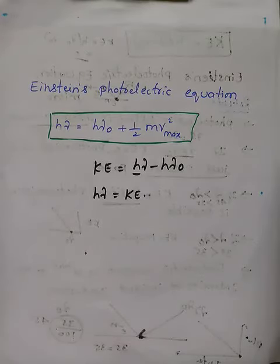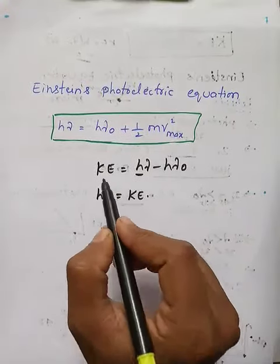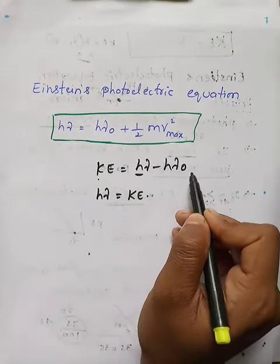Einstein's photoelectric equation is h nu equals h nu naught plus half mv square. We already know that kinetic energy equals h nu minus h nu naught.